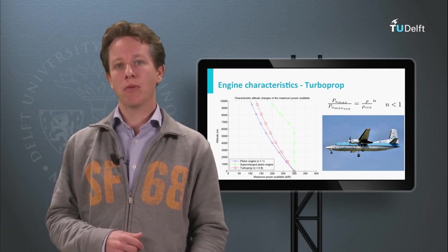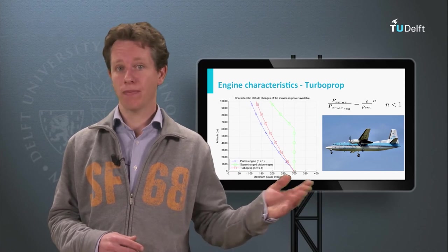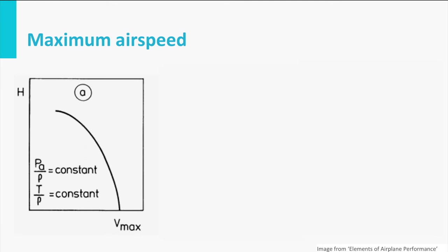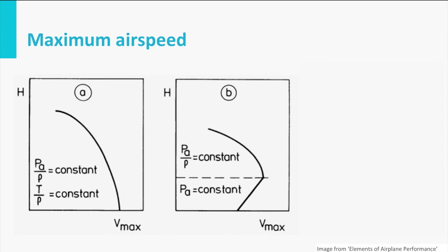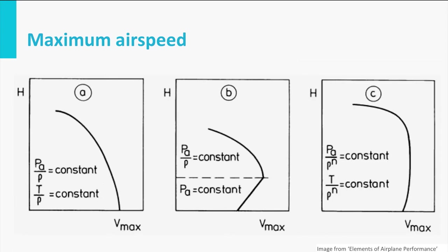Now let me show you what the maximum airspeed limit looks like for the three scenarios we just considered. In the first case, the maximum power available drops quite rapidly and is therefore the dominant effect — hence, maximum airspeed decreases as a function of altitude. In the second case, a supercharged piston engine, engine power stays constant at low altitude; hence, the airspeed limit change is dominated by aerodynamic effects and maximum airspeed increases first, then from a certain altitude it decreases just like the first scenario. In the final case, a turboprop, the aerodynamic and power effects balance each other more or less out up to a certain altitude where maximum airspeed reduces quite rapidly.